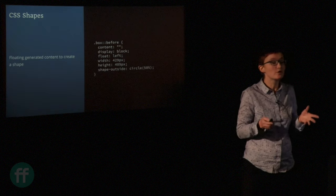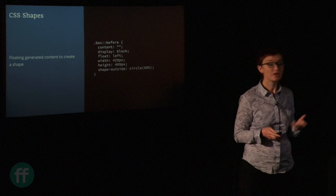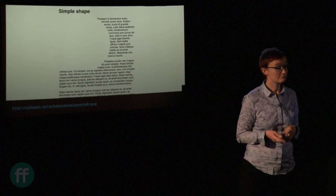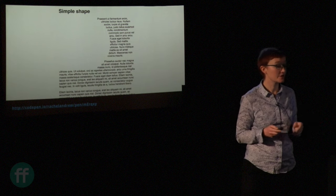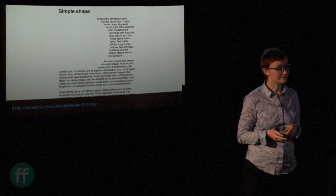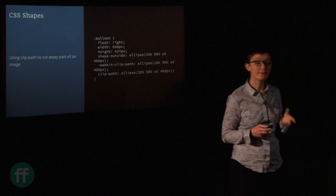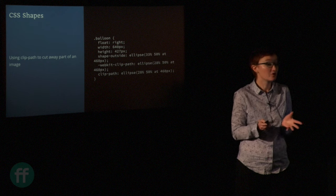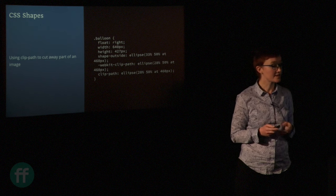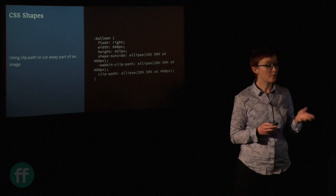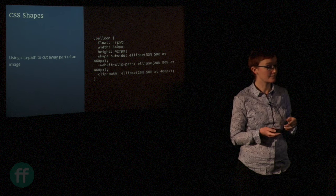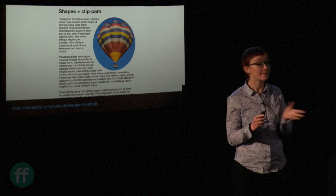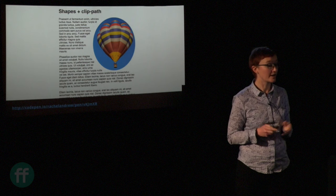You don't have to use an image — you do need something to float, but you could float some generated content and use the shape on that, creating a curvy text effect without any image. Something else that's nice is that clip-path — a different property that takes the same values as shapes — lets you clip away content from an image based on that shape. Here I'm saying shape-outside: ellipse() and also using clip-path (with the -webkit- prefix for WebKit). That lets us clip away the blue sky from a landscape image, leaving just the elliptical shape.